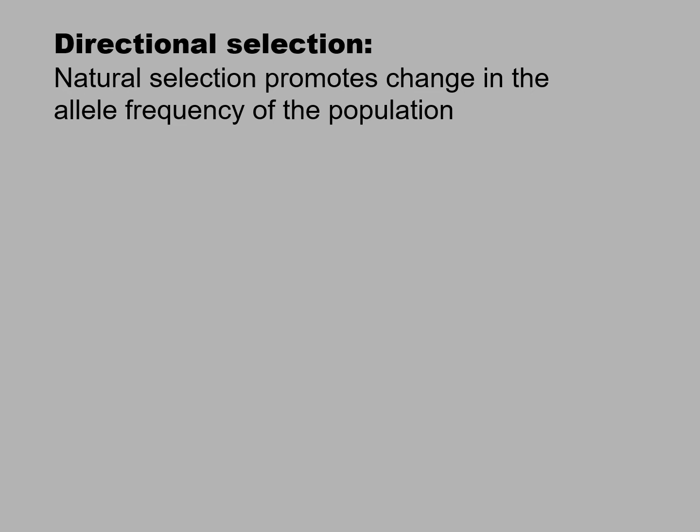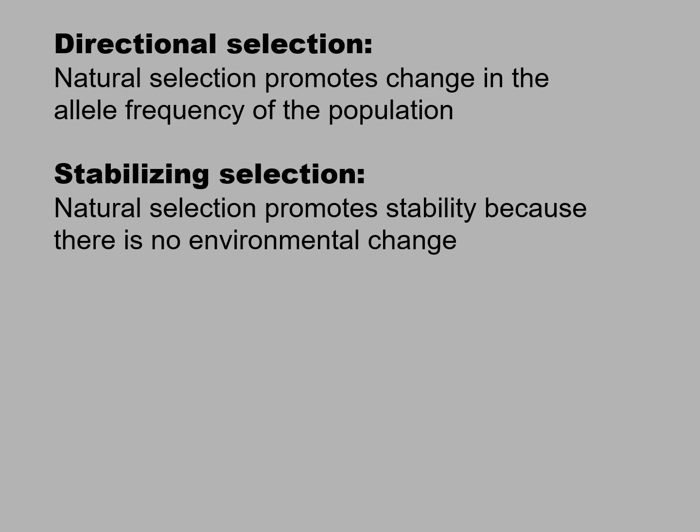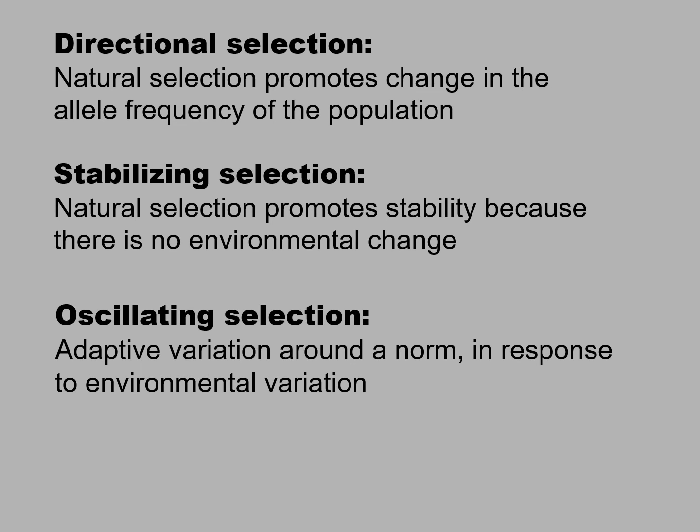Directional selection refers to when natural selection does promote change in the allele frequency of the population. But you may also have stabilizing selection, when natural selection promotes stability because there is no environmental change. Or you may have oscillating selection — adaptive variation around a norm in response to environmental oscillations.